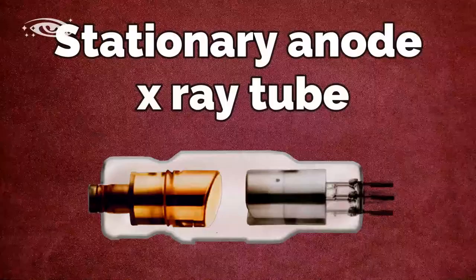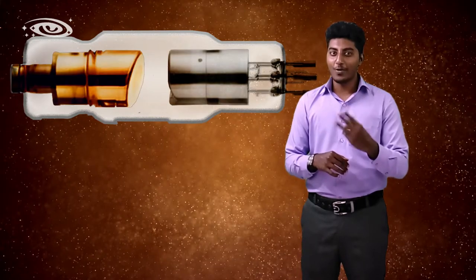Welcome, this is Gautam, welcome to Immortal Universe. In this video we will see the construction of stationary anode x-ray tube. Now let's get started. To build a stationary anode x-ray tube we need three major components: glass tube, cathode, and anode.